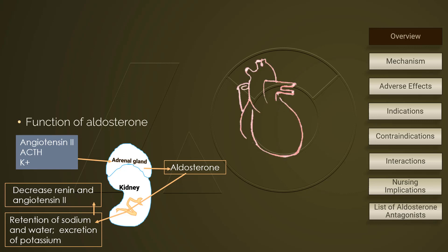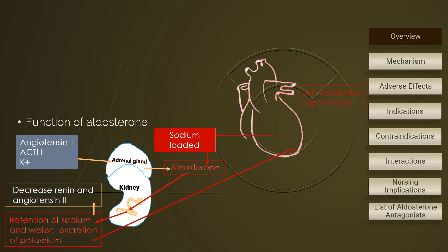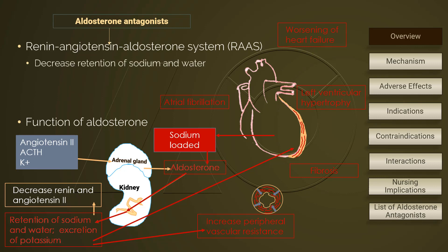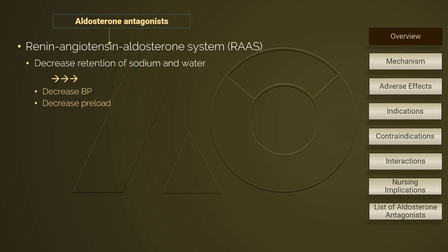In heart failure, sodium is pathologically loaded. Responding to that, aldosterone increases left ventricular hypertrophy, fibrosis, atrial fibrillation, worsening heart failure, and peripheral vascular resistance. Aldosterone antagonists work directly on the hormonal side of RAS, counteracting the effects of aldosterone and resulting in decreased retention of sodium and water by the kidneys. The further effects are diuresis, decreased blood pressure and preload. Aldosterone antagonists belong to the category of antihypertensives.